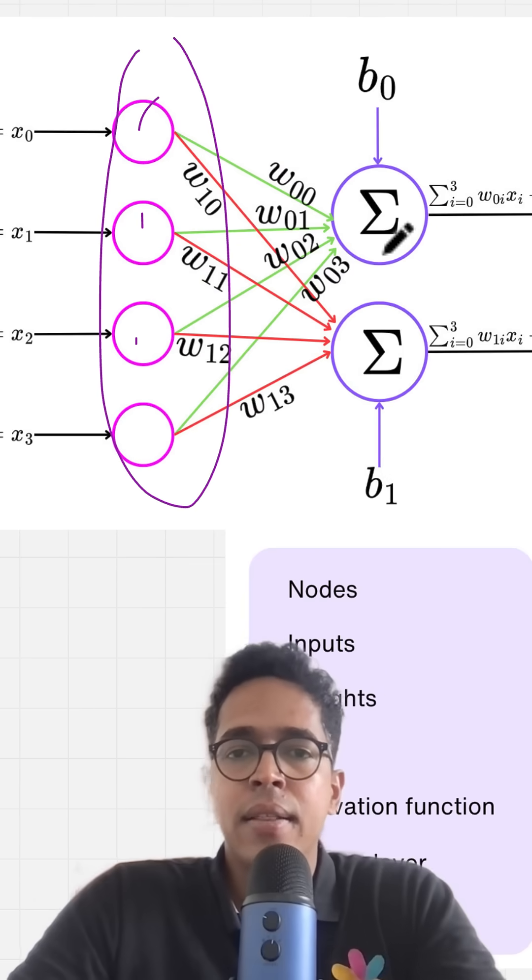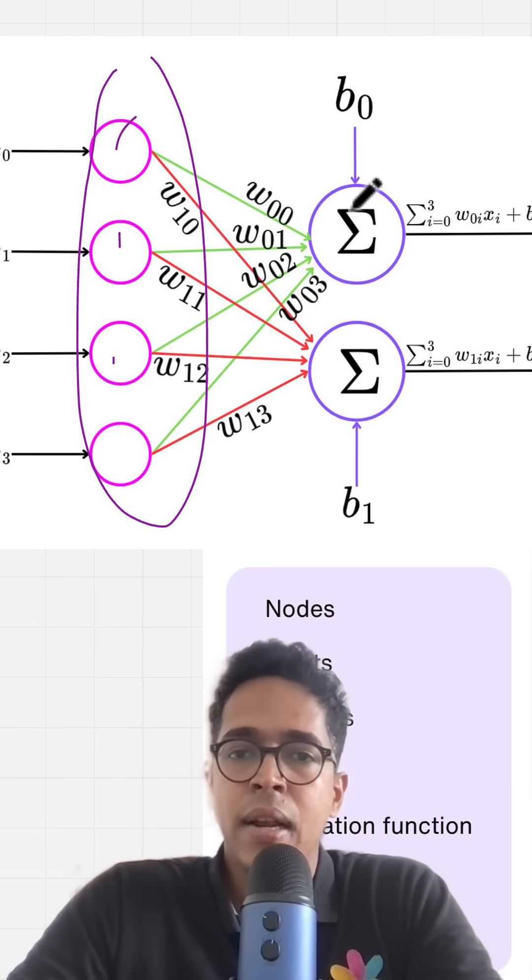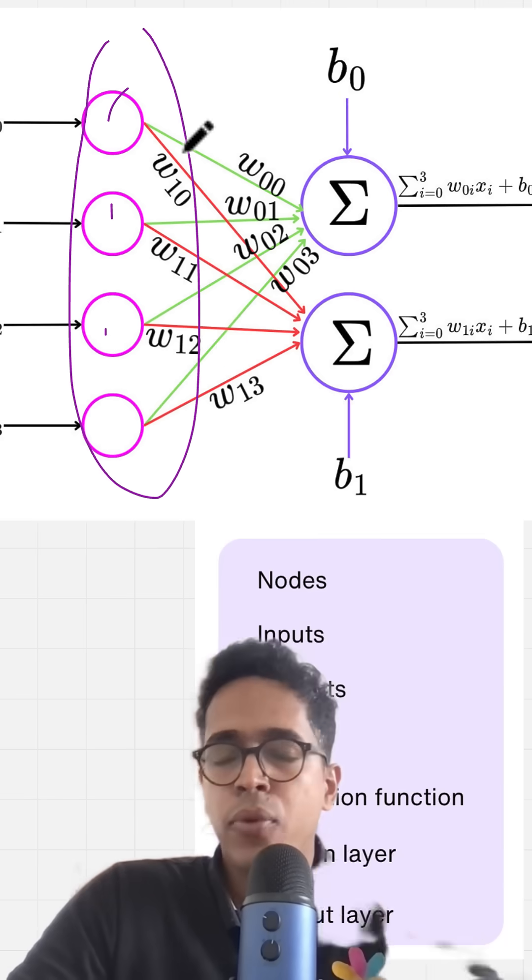The input layer is connected to either the output layer or the intermediate hidden layers. And if all the neurons in each layer are connected to every single neuron in the subsequent layer, it's called a fully connected network.